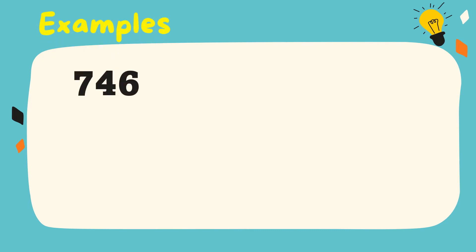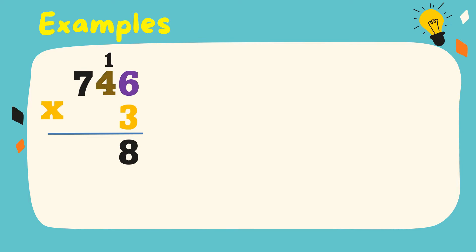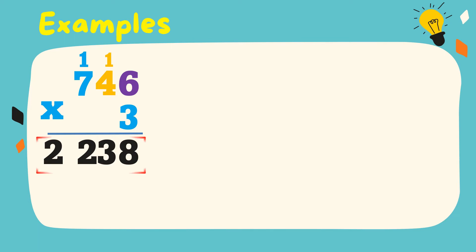To understand the steps, let's study some examples. 746 times 3. 3 times 6 is equal to 18. Write 8, regroup 1. 3 times 4 is equal to 12, plus 1 is equal to 13. Write 3, regroup 1. 3 times 7 is equal to 21, plus 1 is equal to 22. Write 2. Therefore, the product is 2,238.